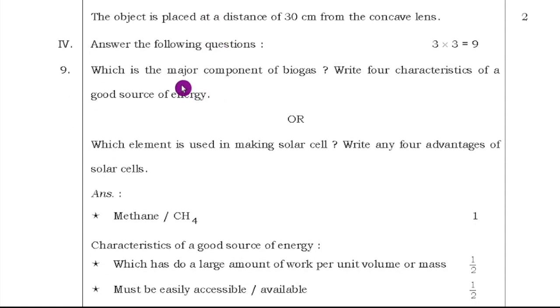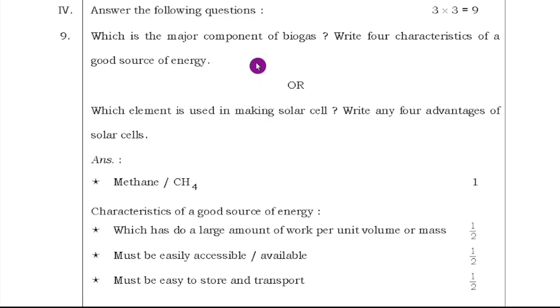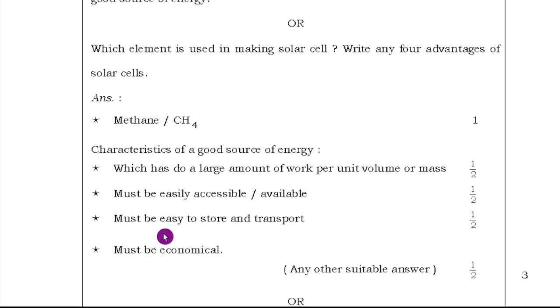Ninth question, which is major component of biogas? Write two characteristics of a good source of energy. Or, which element is used to make solar cell? Write any four advantages of solar cells. Here option is there. Each question carries three marks. Methane is the major component of biogas. What are the characteristics of good source? It is very important question. It must be economical. Must be easy to store and transport. Must be easily accessible or available. Which has to do a large amount of work per unit volume or mass. Each point carries half marks, very important.